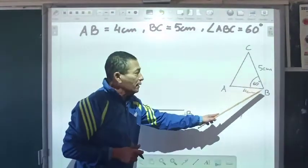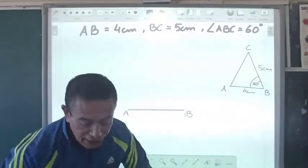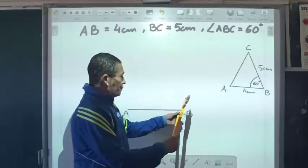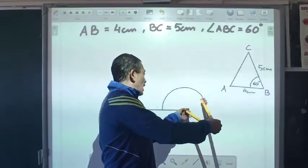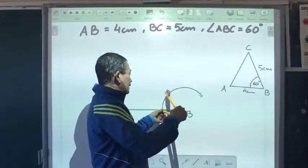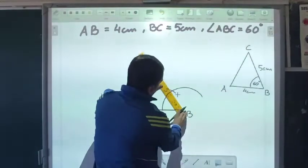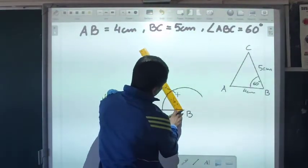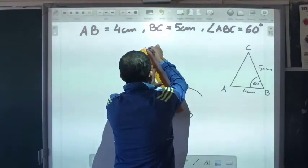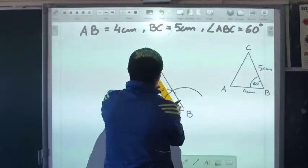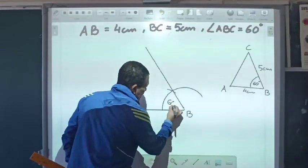Now angle ABC is 60 degrees. So I will draw a 60 degree angle at B. Making B our vertex, I will draw my main arc and then I get my 60 degree angle. So if I join these, I'm going to get a 60 degree angle here.